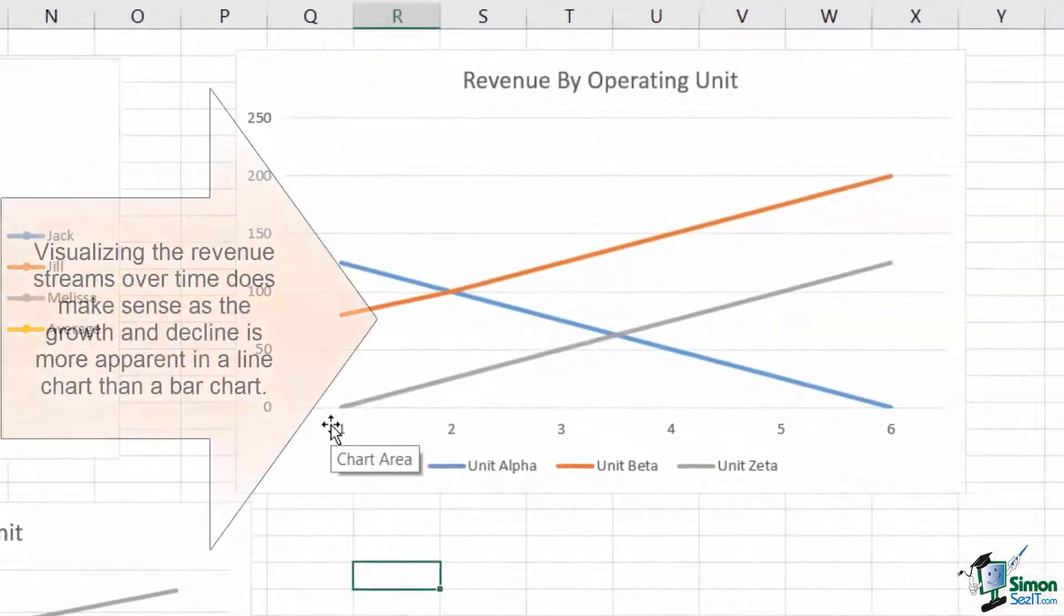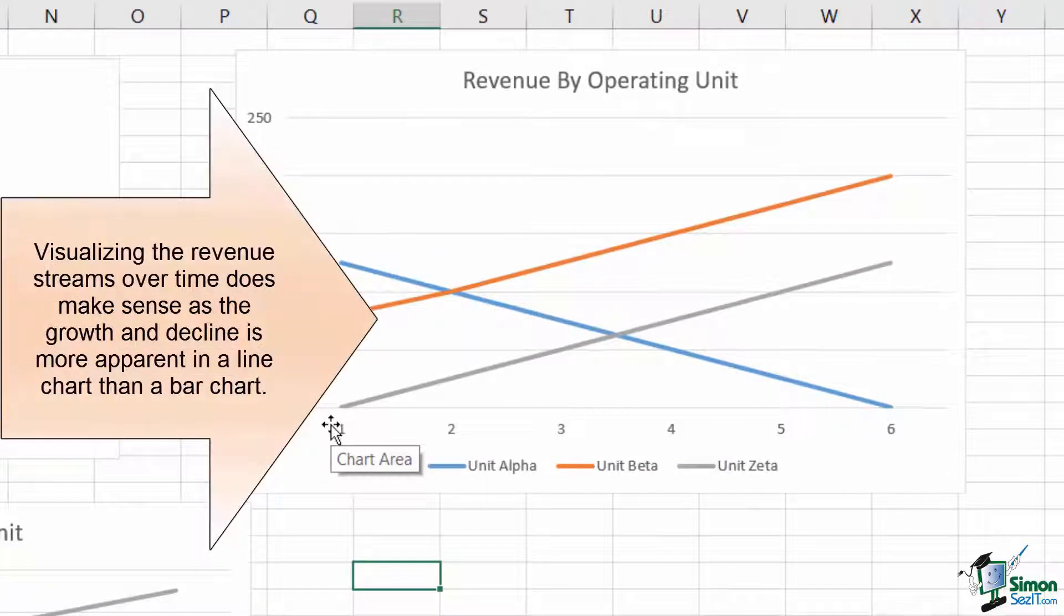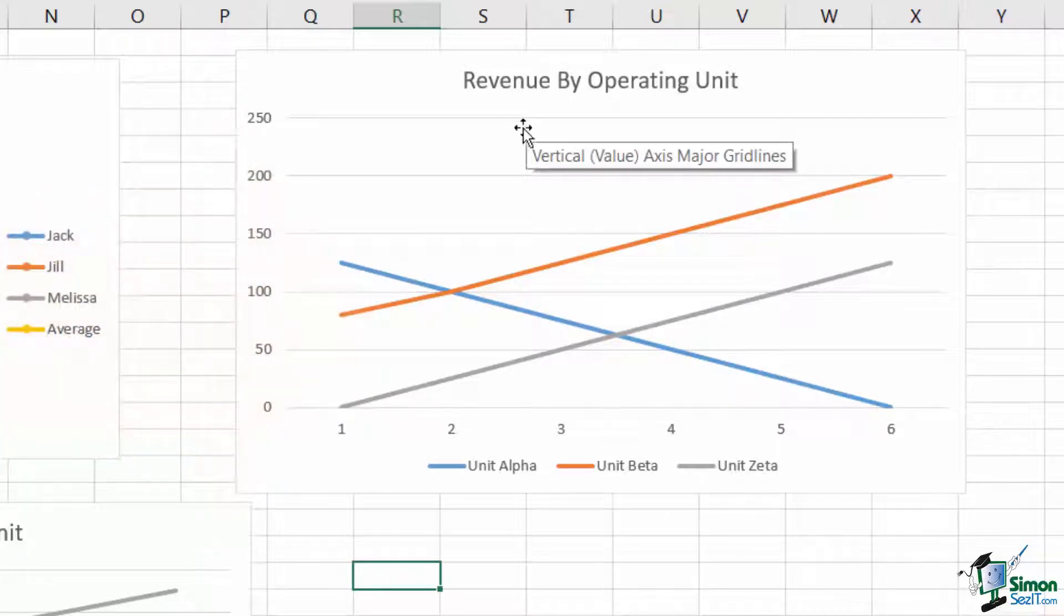Comparatively, plotting the revenues by operating units on a line chart helps to show us how the revenues are changing over time. Each chart has a different value.